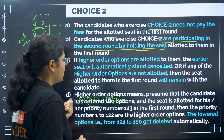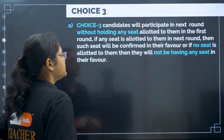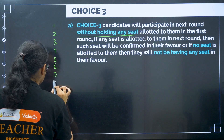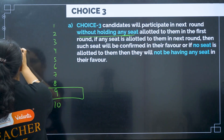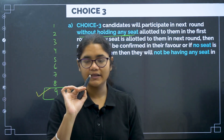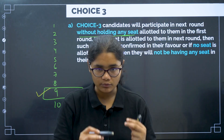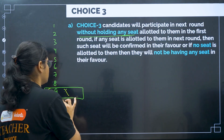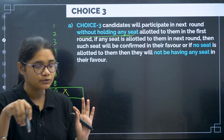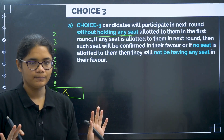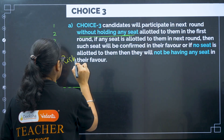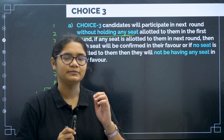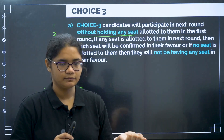For Choice 3, candidates participate in the next round without holding any seat. For example, suppose you were allotted your ninth option. If you select Choice 3 and are allotted a seat in round two, that's fine. But if you are not allotted anything in round two, the ninth seat is also lost — you will have zero seats remaining. This option is little risky. I would say only select it if you are highly dissatisfied with the allotted college; otherwise, please try to avoid this option because there is no backup plan.